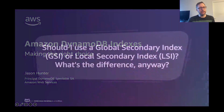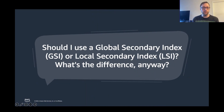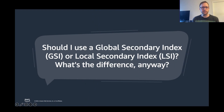Something I hear a lot from customers is: when it comes to choosing a secondary index, should I choose a global secondary index — a GSI — or a local secondary index — an LSI? What's the difference? Why do we have both anyway?